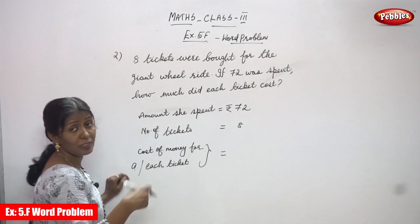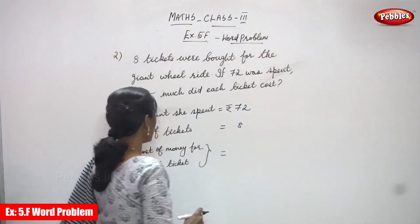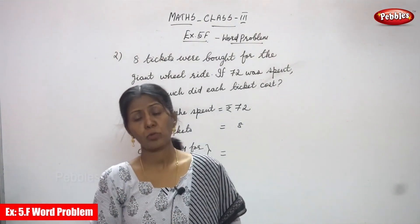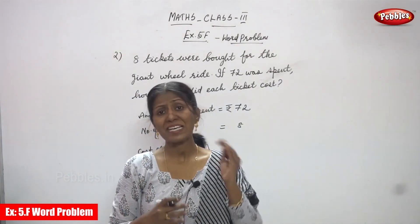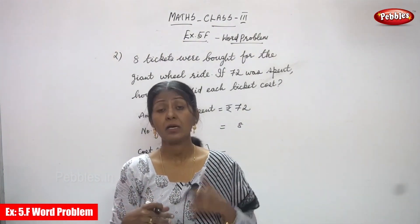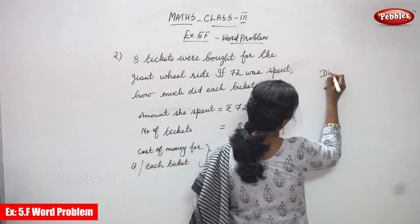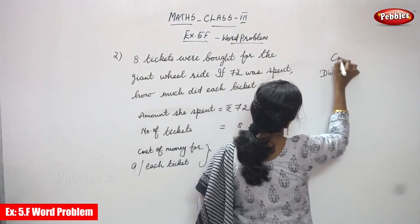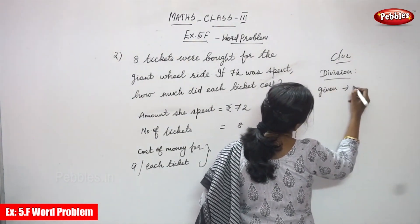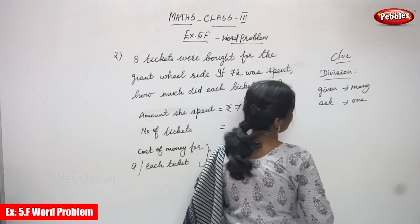You know this very well — it is a division. Because the number of tickets is 8, that is 'many'. Cost of money for a ticket — that is what we have to find out, the single one. Division means: many is given, we have to find out single one. Given many and asked for one — it is division.